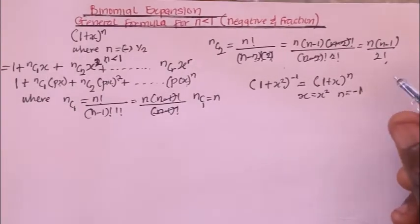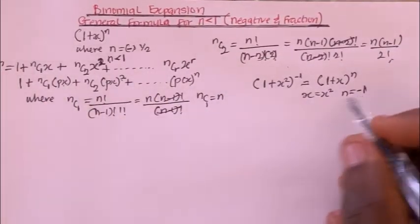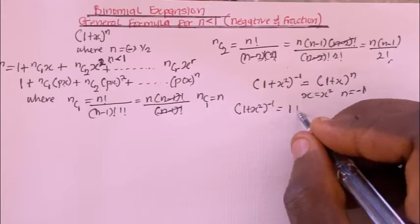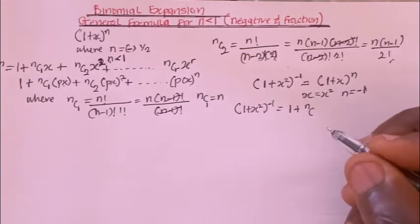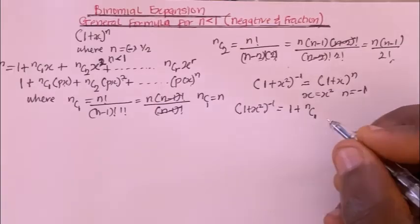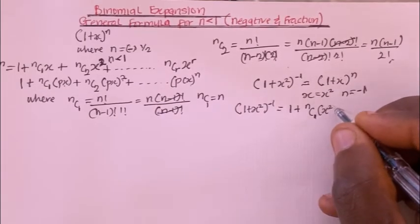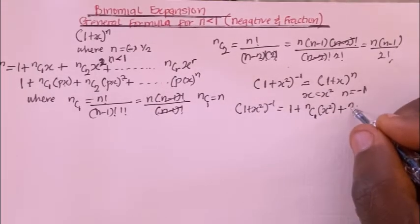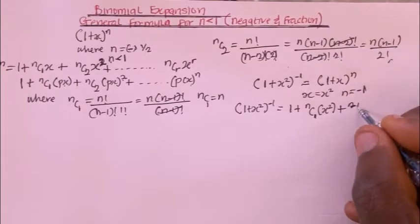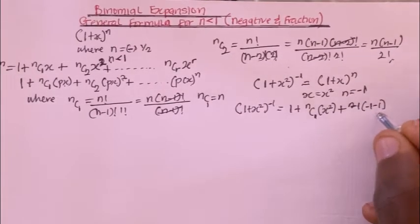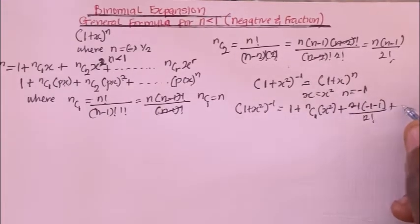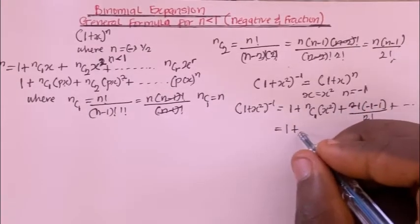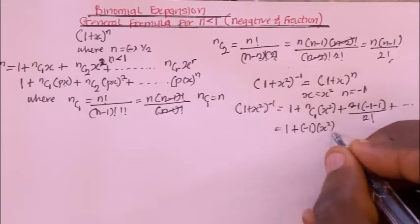Using the general expression, (1 + x²)^(−1) equals 1 plus nC1 times x², plus nC2 which is (−1)(−1−1) divided by 2! times x² squared, plus other terms.